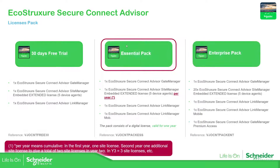Now let's go to the essential pack. You can see here the comparison between the packs. The essential pack covers: one gate manager for the cloud, one site manager for only five device agents, one link manager, and also includes the link manager mobile. The link manager mobile is for the future — it's going to be covered later.